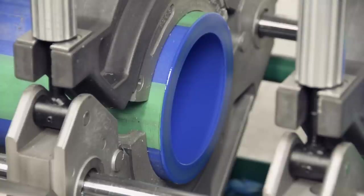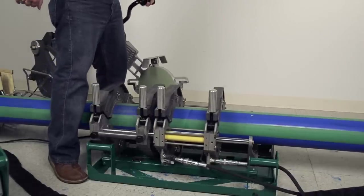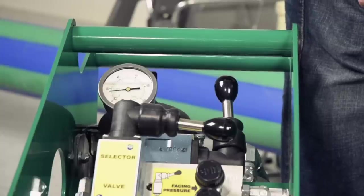As you are completing the visual check, begin closing the carriage. Leave the carriage control valve in the closed position for the remainder of the fusion process.